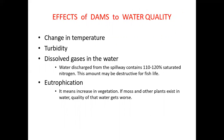Effects of dams on water quality include change in temperature, increase in turbidity, and dissolved gases in the water. Water discharged from the spillway contains 110 to 120% saturated nitrogen, which may be destructive for fish. Through eutrophication, if moss and other plants exist in the water, the water quality gets worse.